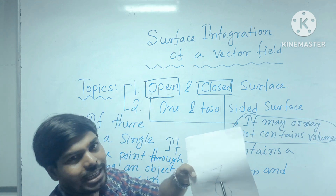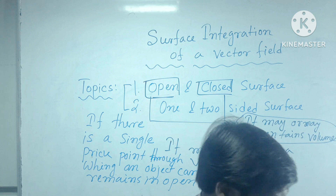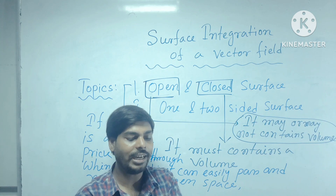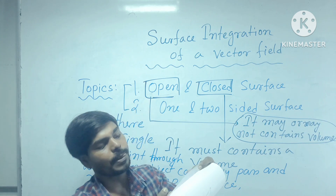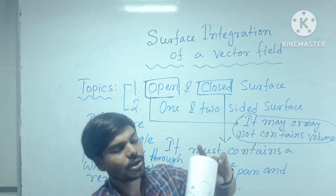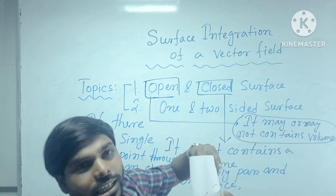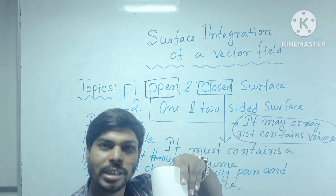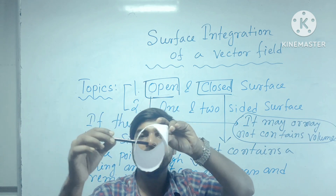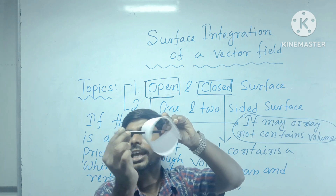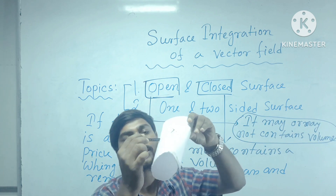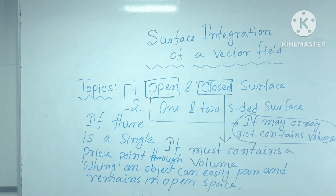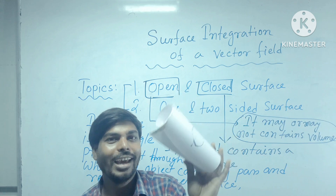Can we use this definition when we are making a cylinder by rolling this paper? If this is the outer surface and this is the inner surface, we can easily make a hole here and the pin can reach the other surface. But right now you can see — the two sides of the pin, the head and the tail, are in open space, because the inside space of an open cylinder is also open space, not closed space. So that's why this is an open surface.